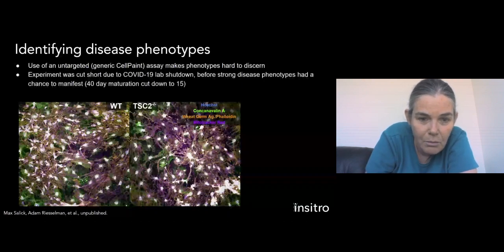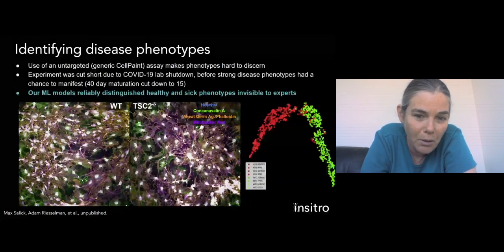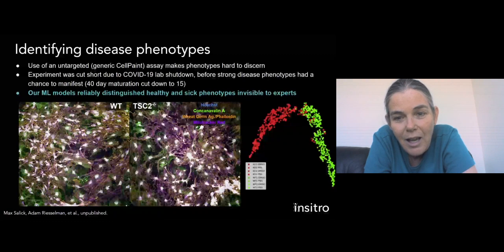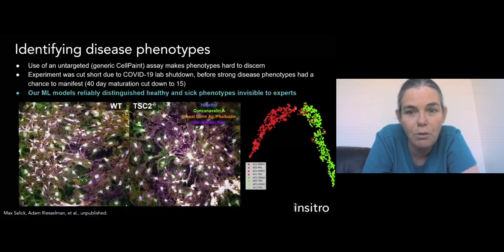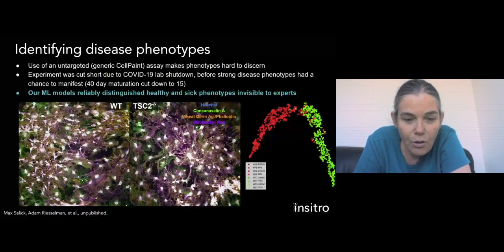Well, it turns out that machine learning is actually much better than people at detecting these phenotypes, even from these untargeted assays, and gets almost perfect prediction between healthy and sick. So that was the first part of the good news.